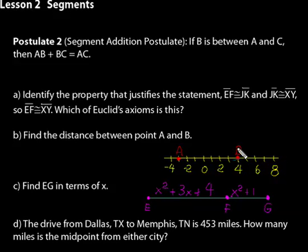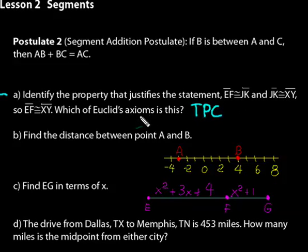Now let's do some practice problems. Practice problem A: identify the property that justifies the statement. You can pause and try them yourself or work along with me. The answer is the transitive property of congruence — that's most like Euclid's axiom number 1: things that are equal to the same thing are equal to each other.